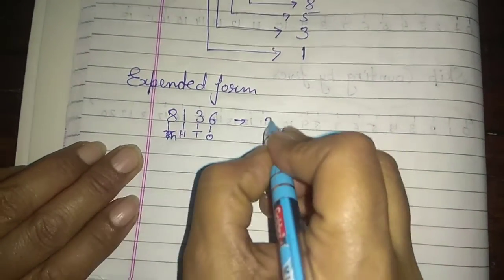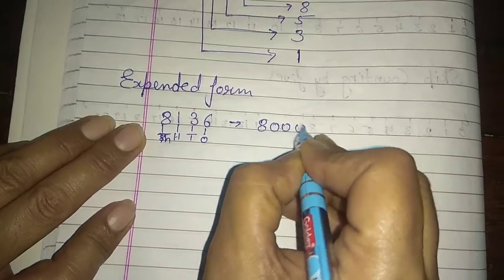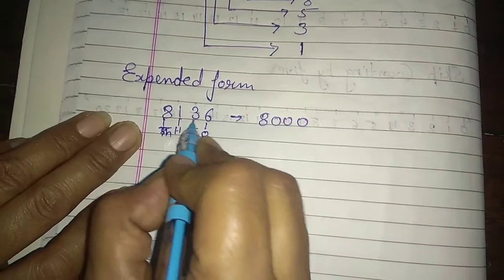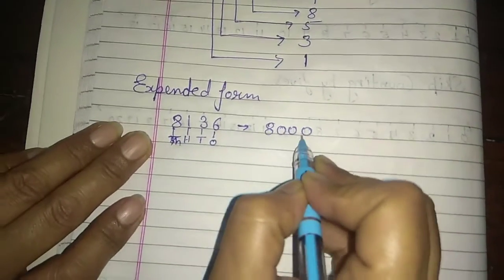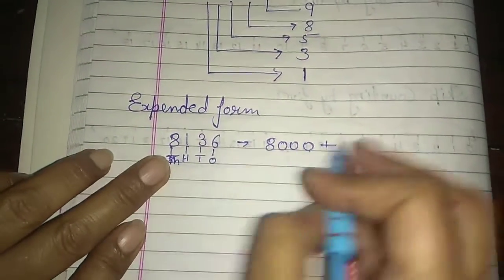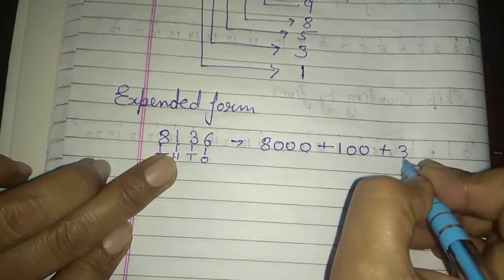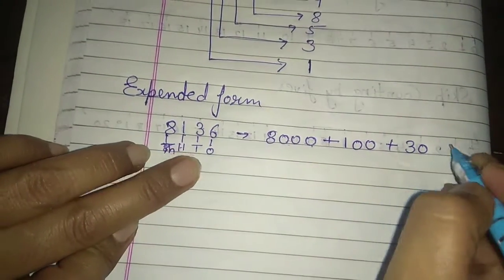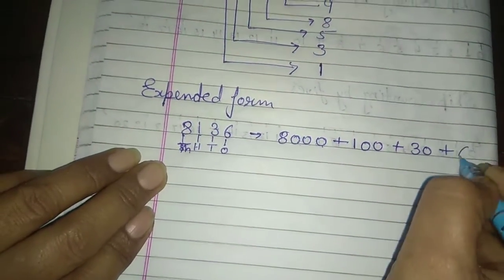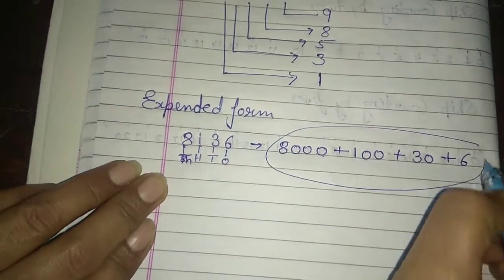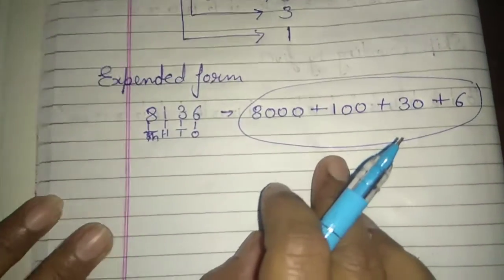Now, what do we have written in the eight? Eight thousands, or eight times one thousand. Or, whatever the number is, you can add as many zeros. Add one hundred, add three times ten which is thirty, and ones is six. So, this pattern is expanded form.